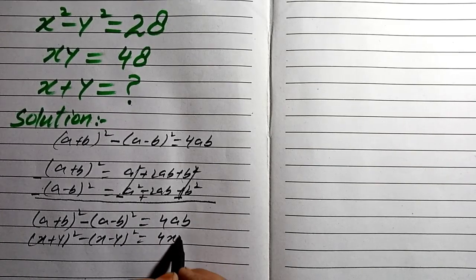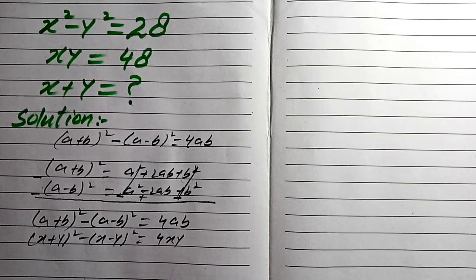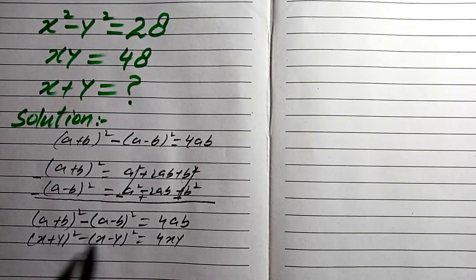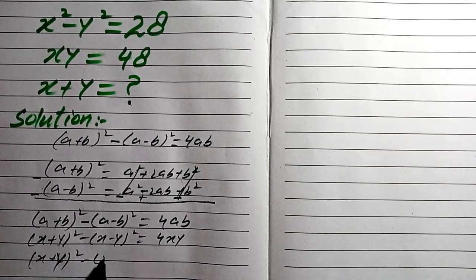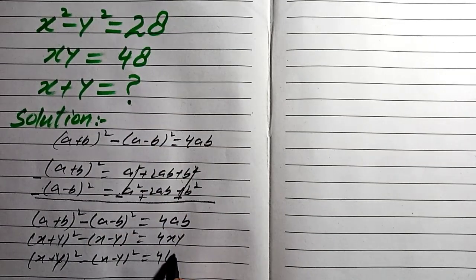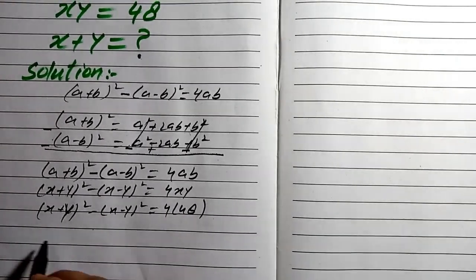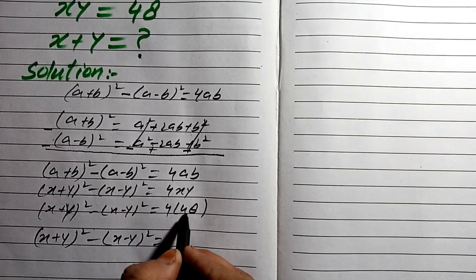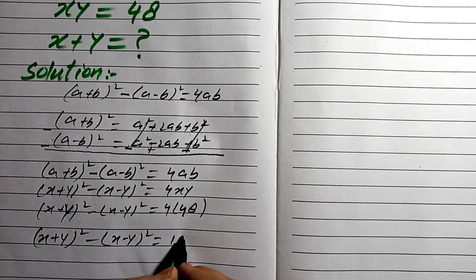Substituting into the formula: (x+y)² minus (x-y)² equals 4xy. We are given that xy equals 48, so 4 times 48 equals 192. Therefore, (x+y)² minus (x-y)² equals 192. We will call this equation 1.